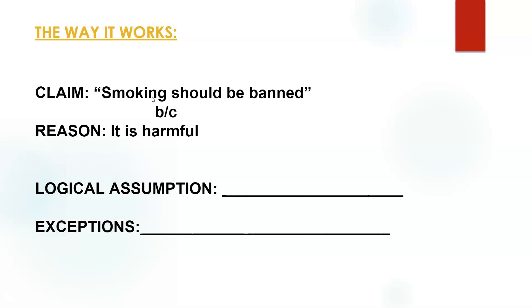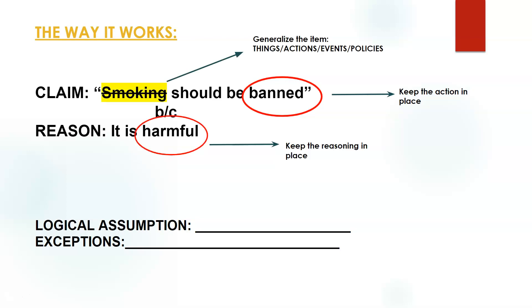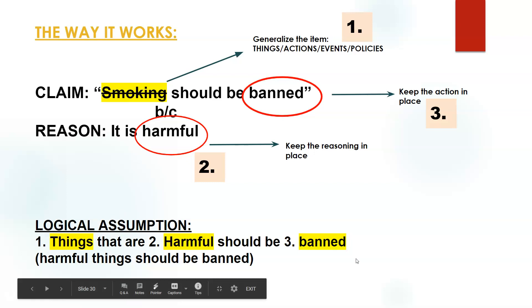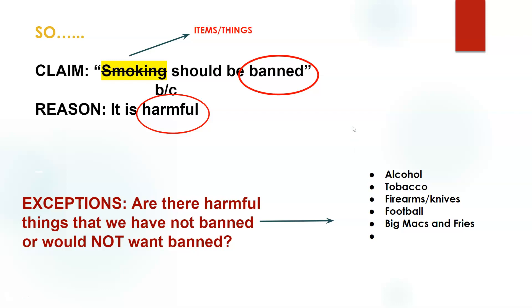Here's a sample claim: 'Smoking should be banned because it is harmful.' The logical assumption is that harmful things should be banned. But there might be exceptions — are there harmful things we have not banned or would not want banned? This can include things like alcohol, tobacco, firearms, knives, football, or other things like Big Macs and fries. So you want to keep the action in place and keep the reasoning in place, but also consider potential exceptions to your logical assumption.